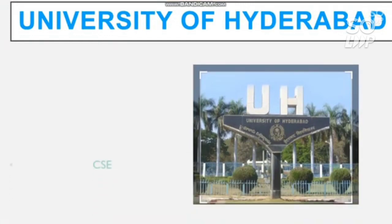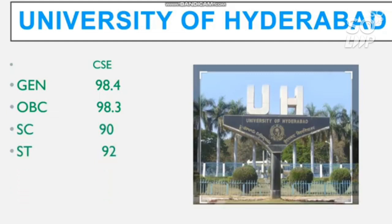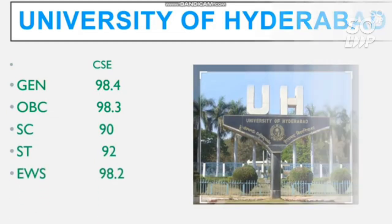The next institution is University of Hyderabad. There is only one branch — CS. The cutoff percentile: General requires 98.4, OBC requires 98.3, SC requires 90, ST requires 92, and EWS requires 98.2 percentile.